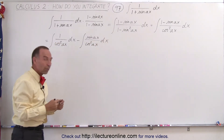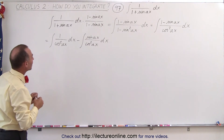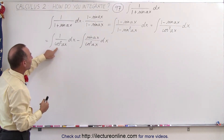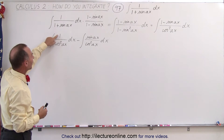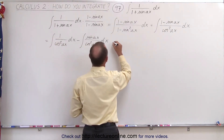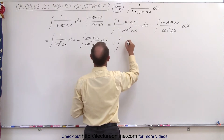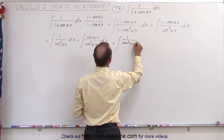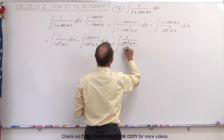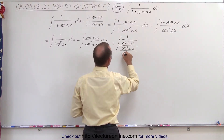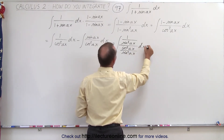Now we have to remember the tricks to integrate these two. For the first integral, we're going to divide both the numerator and the denominator by sine squared of Ax. So this is equal to the integral of 1 over sine squared of Ax, divided by cosine squared of Ax over sine squared of Ax, dx minus the second integral.